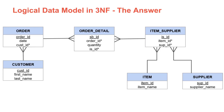Here is the complete logical data model in third normal form — this is the answer. You need to remember to show the relationships between tables correctly, to underline the primary keys, and to place an asterisk at the end of the foreign keys in each table.